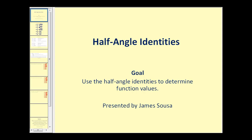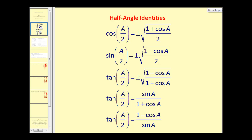Welcome to a video on half angle identities. The goal of this video is to use half angle identities to determine function values. Here we see all of the half angle identities. Notice a lot of these seem very similar, so be very careful when you copy them down. Notice that the first three have a plus or minus sign on them. What this tells us is that we have to determine whether the function value will be positive or negative based upon the quadrant of angle A over two.